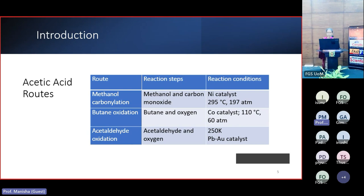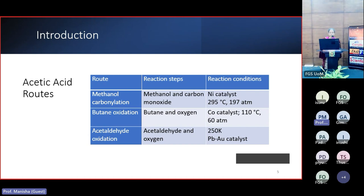Different catalysts are used and the operating conditions involve various temperatures and pressures. When we select a process route, the chemicals involved in that route will be the chemicals present in our plant. So the hazards associated with the chemical plant will be the hazards associated with the chemicals involved in that selected route. If we avoid routes which are hazardous, we can avoid such hazards in our plant as well.